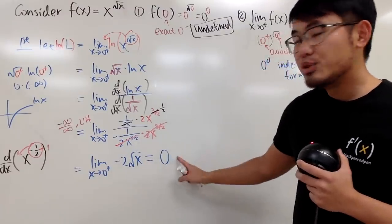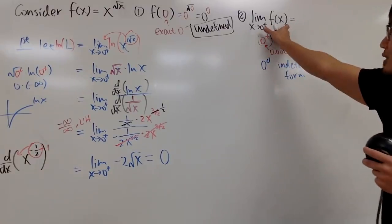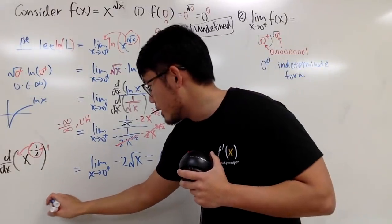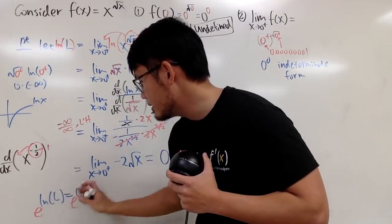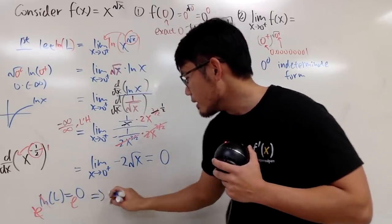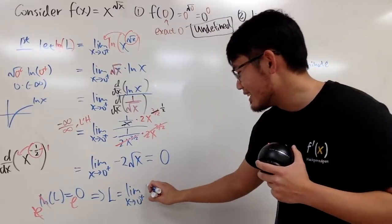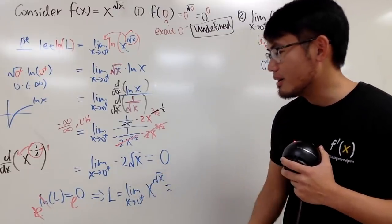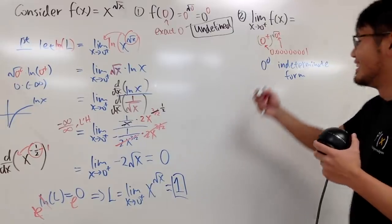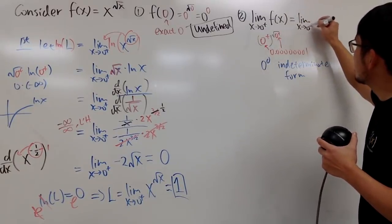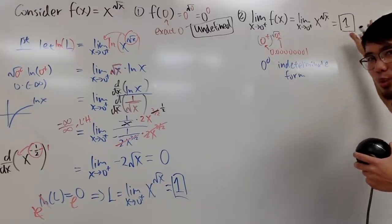But 0 is not the final answer — that's ln L equals 0. We were trying to find L, which is the original limit. So we take e to both sides to cancel the ln. This means L — which is the limit as x approaching 0 plus of x to the square root of x — equals e to the 0 power, which equals 1. So the limit is 1, and this is the legitimate 1.